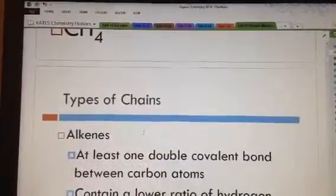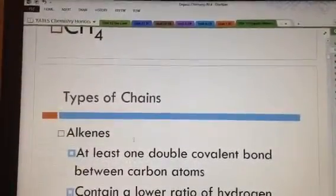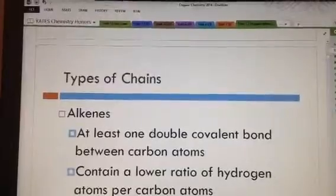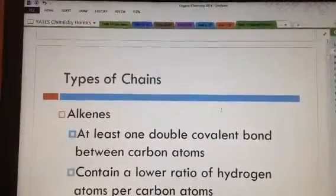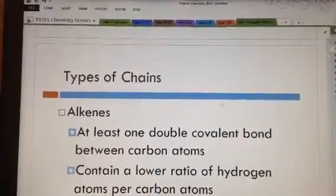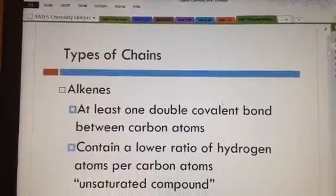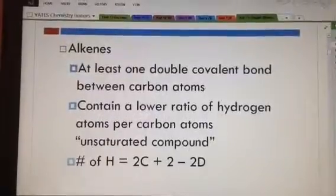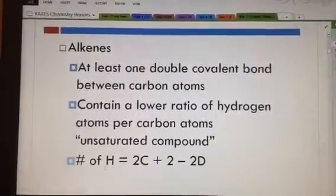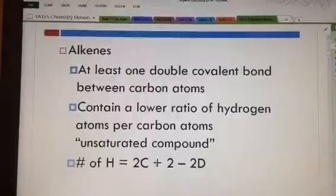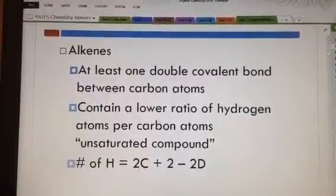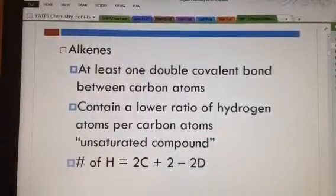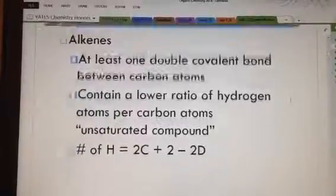The next type of chain is called an alkene. An alkene has at least one double bond somewhere in it. It's got a lower ratio of hydrogens because it has a double bond. So that's called an unsaturated compound. To figure out how many hydrogens it has, it's two times the number of carbons plus two. That's the concept for an alkane. Minus two for every double bond that you have.